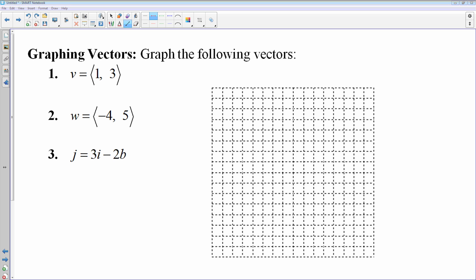Then we will just pick any starting point. The first number tells you how far left or right. The second number tells you how far up or down. So if I'm going to graph vector v, you can start anywhere. You can start at the origin if you want. But I'm just going to pick a point. And I know that I need to go to the right one unit. And then I need to go up three units like that.